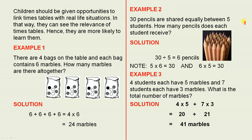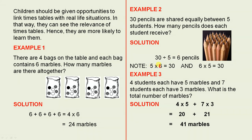Example 2. 30 pencils are shared equally between 5 students. How many pencils does each student receive? The solution: 30 pencils divided by 5 students gives us 6 pencils. We note that 5 times 6 equals 30 and 6 times 5 equals 30, so all these are linked. Each person receives 6 pencils.